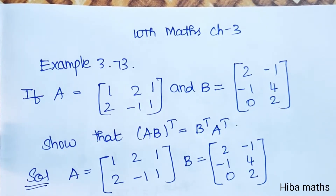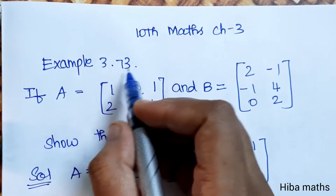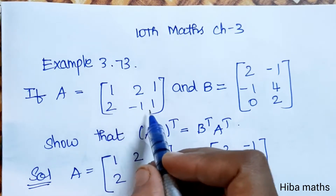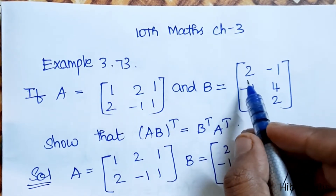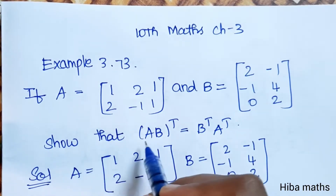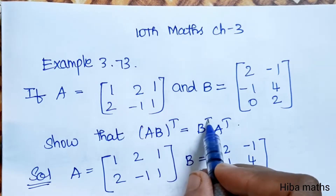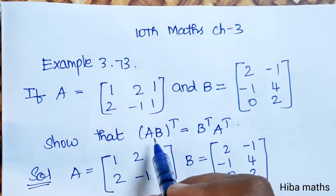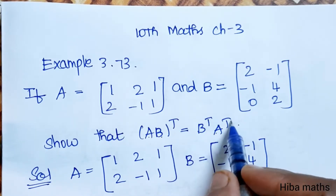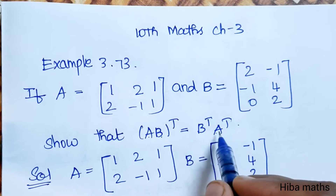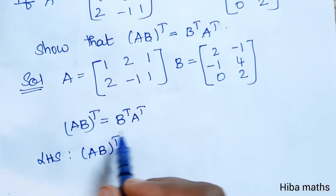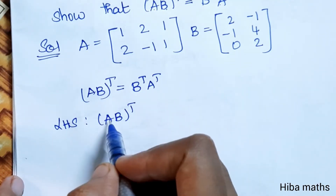Hello students, welcome to Hibamax 10 Star. Chapter 3, Example 3.73: if A equals [1 2 1; 2 -1 1] and B equals [2 -1 -1; 4 0 2], show that (AB)ᵀ equals BᵀAᵀ. We will prove this through the transpose of A and B multiplied. Solution: we have the A and B matrices, and we will compute LHS and RHS.